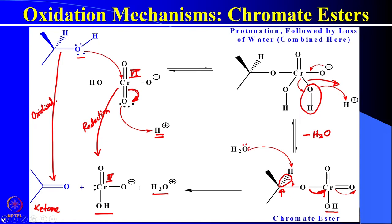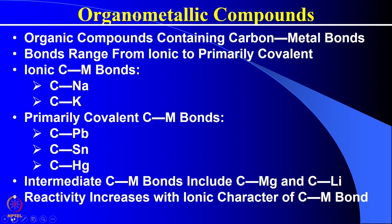Hope this reaction mechanism is clear. Let us now discuss organometallic compounds. These are compounds which contain a carbon-metal bond. The carbon-metal bond ranges from ionic to covalent. Examples of ionic carbon-metal bonds are carbon-sodium and carbon-potassium bonds, whereas primarily covalent bonds include carbon-lead, carbon-tin, and carbon-mercury compounds. Intermediate carbon-metal bonds — carbon-magnesium and carbon-lithium — have character between ionic and covalent. The reactivity increases with the ionic character of the carbon-metal bond.